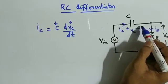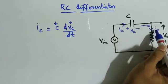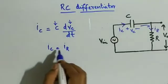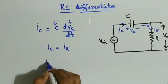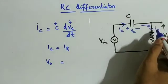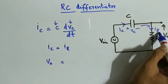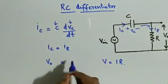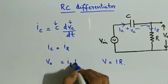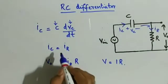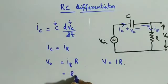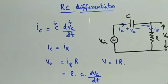On the output side, the same current IC flows through the resistor. IC current is equal to resistor current IR. So the output voltage V0 is across the resistor, and V0 is equal to IR into R. But since IC and IR are the same, we can substitute IC in place of IR. So output voltage is equal to IC into R, which gives us RC into dVC by dt.